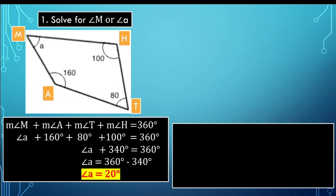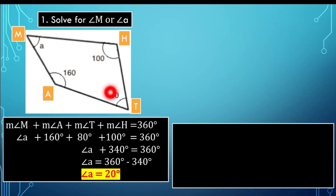To double check, we substitute the measure of angle M, which is 20 degrees. 20 plus 160 is 180, then plus 100 gives 280, plus 80 gives a total of 360 degrees. So that's the measure of angle M that we are looking for.